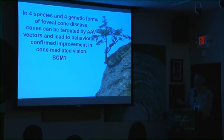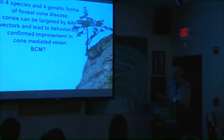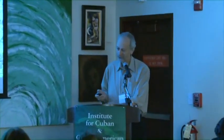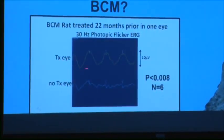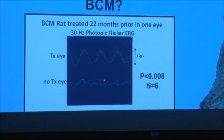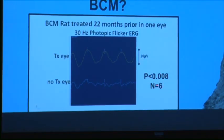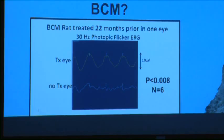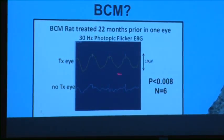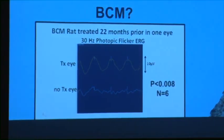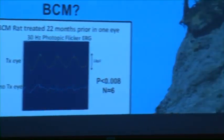The BCM model is based on a rat model discovered in China a few years ago. We're collaborating with them — we sent vector and a surgeon to China. They performed cone-mediated ERG analysis: a treated eye shows a nice photopic flicker response of about 10 microvolts, while the untreated eye in the same animal shows basically no response. The p-value is 0.008 over six treated eyes in six different animals. We believe there will be behavioral improvement as well. So we can potentially extend to five species and five genetic forms.